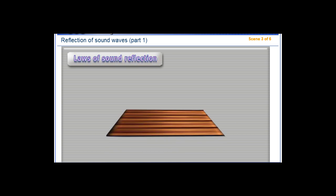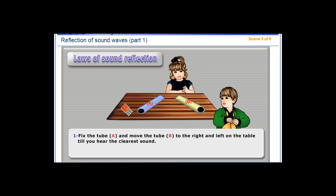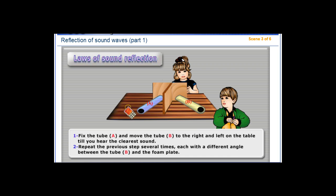Laws of sound reflection. Fix the tube A and move the tube B to the right and left on the table till you hear the clearest sound. Repeat the previous step several times, each with a different angle between the tube B and the foam plate.